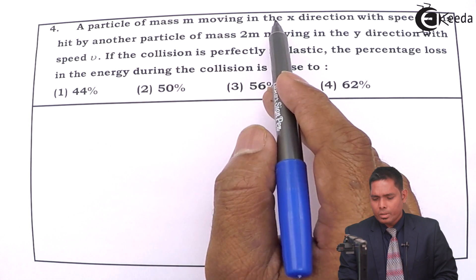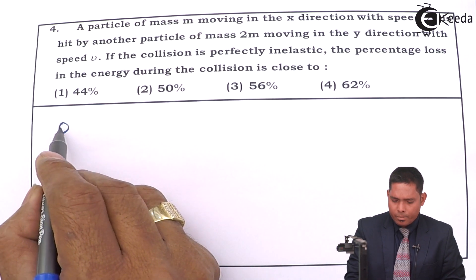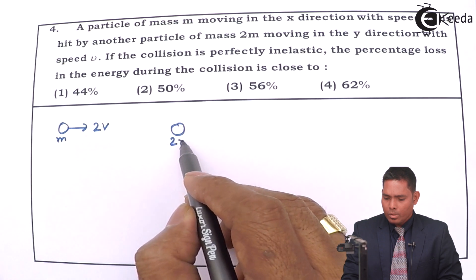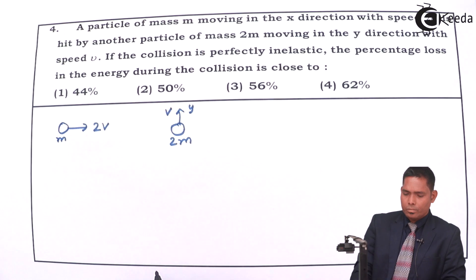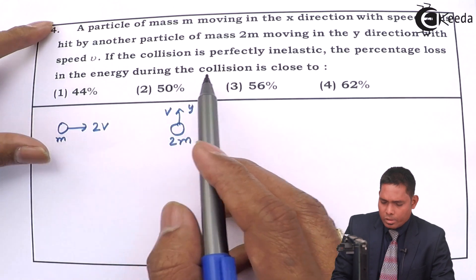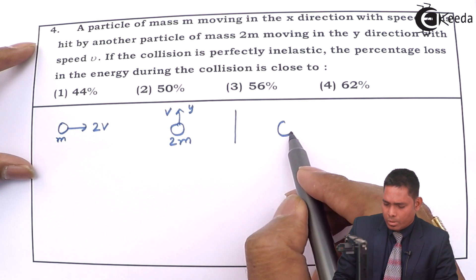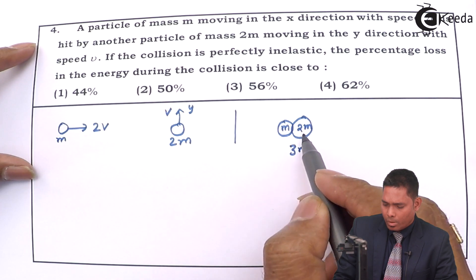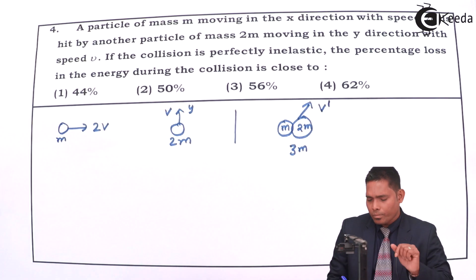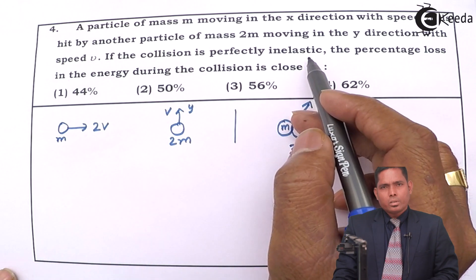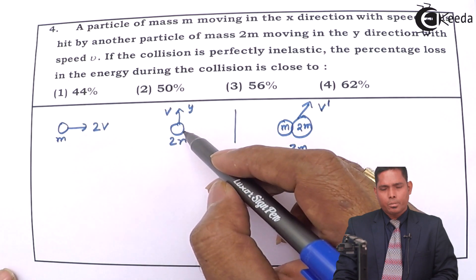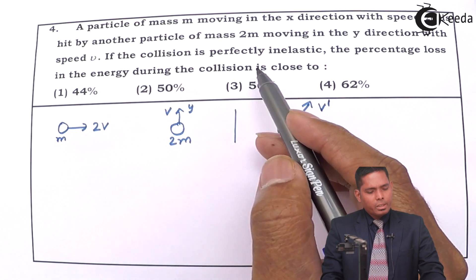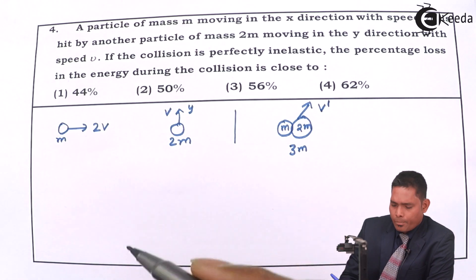There is a particle of mass m moving in the x direction with velocity 2v, and it is hit by another particle of mass 2m moving in the y direction with velocity v. They collide and the collision is perfectly inelastic — after collision the total mass is 3m and they move with a certain common speed v'. You have to find the percentage loss in energy during the collision.